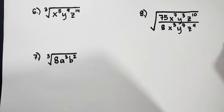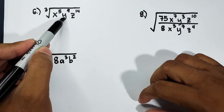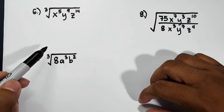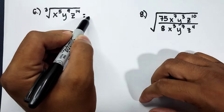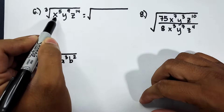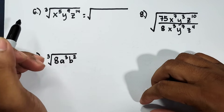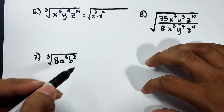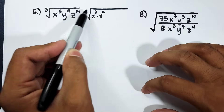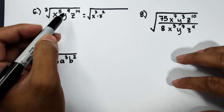Let's move on with number 6. We have the cube root of x to the 5th power, y raised to 9, z raised to 14. The index is 3. For x to the 5th, we factor the exponent so that one part is divisible by 3: x cubed times x squared, since 3 plus 2 is 5, and x cubed is a perfect cube while x squared is not.